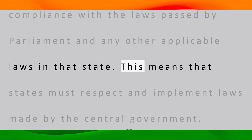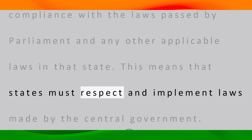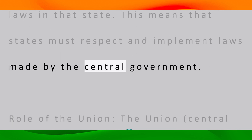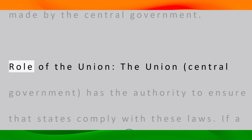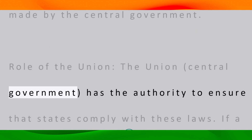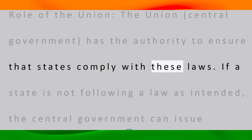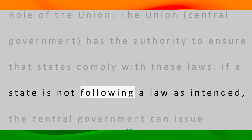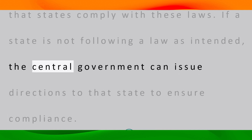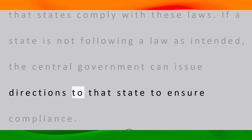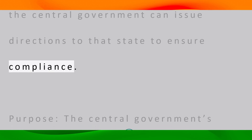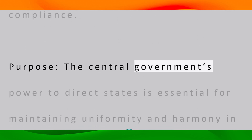This means that states must respect and implement laws made by the central government. The union, or central government, has the authority to ensure that states comply with these laws. If a state is not following a law as intended, the central government can issue directions to that state to ensure compliance.